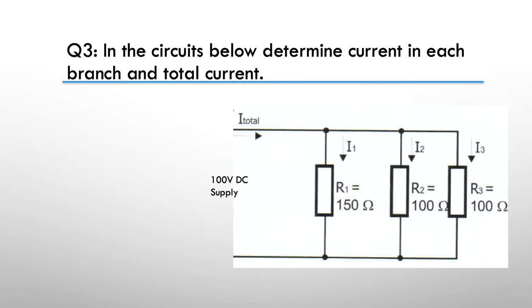Question three, in the circuit below determine the current in each of the branches and the total current. So we've got a 100 volt DC supply, R1 is 150 ohms, R2 is 100 ohms, and R3 is also 100 ohms. And we need to find out the three currents and the total current. So pause here.